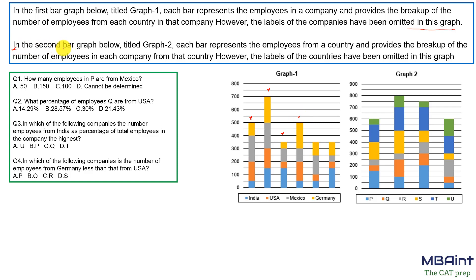In the second graph, titled Graph Two, each bar represents employees from a country and provides the breakup of number of employees in each company from that country. We do not know which country each bar graph belongs to. There are four countries and four bar graphs for the countries, and within each bar graph we have different companies.